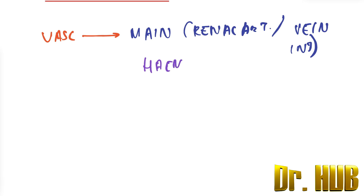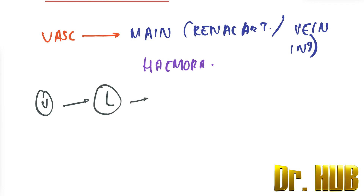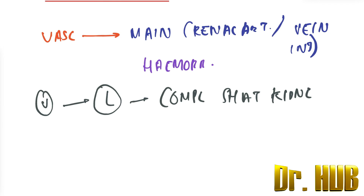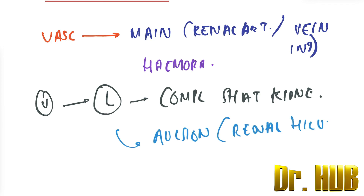Grade five involves laceration resulting in a completely shattered kidney, as well as avulsion of the renal hilum, which devascularizes the kidney.